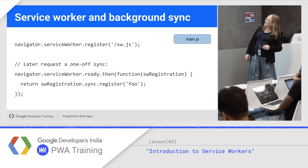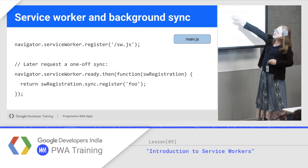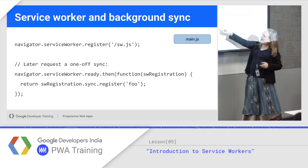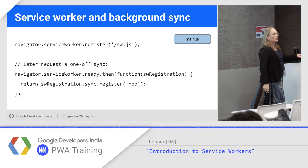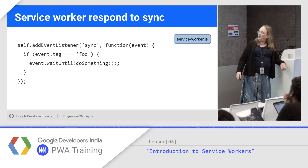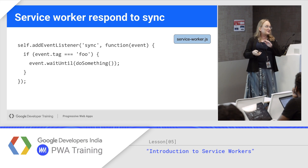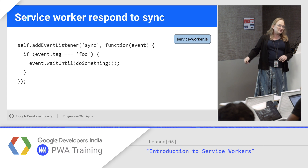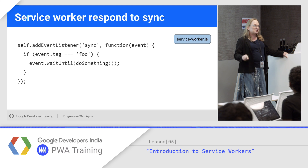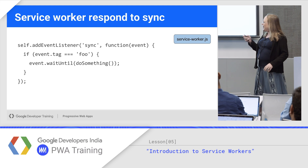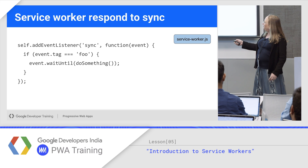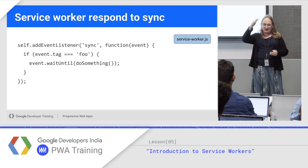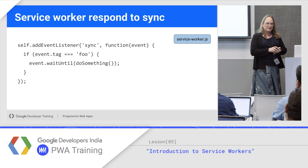Here's an example of background sync — a one-off. Register the service worker, get the registration, wait for it to be ready, then call sync.register with a tag like 'foo' for a one-time sync request. You can also schedule them. A sync event that comes in has an event tag so you can tell different events apart. Note event.waitUntil — since the service worker can be shut down when idle, event.waitUntil around asynchronous code keeps the service worker awake until that promise is resolved.